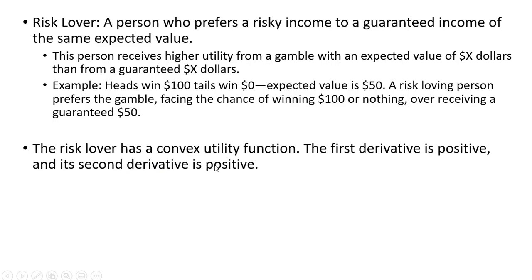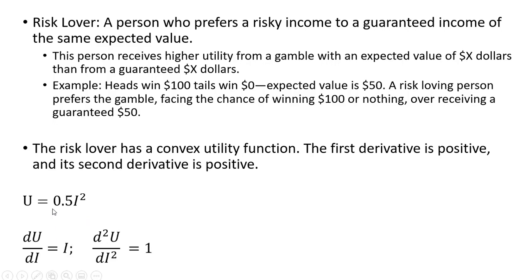The risk lover has a convex utility function. The first and second derivative will be positive. Here's an example of a risk lover's utility function: U = 0.5 times i squared, where i represents income. Taking the derivative with respect to income we get i. And the derivative of i is just 1. So both derivatives are positive — this is a risk lover's utility function.